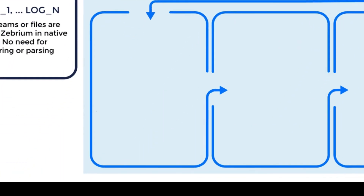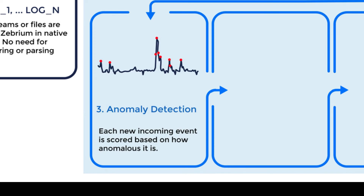As each new event is processed, it is given a score based on how anomalous it is. There are many things that go into anomaly scoring, but the two most significant factors are how rare the event is — for example, an event that occurs for the first time will get a high score — and how bad the event is, meaning events with higher severities get higher scores. Something that is both rare and bad will get an even higher total score.